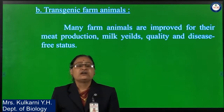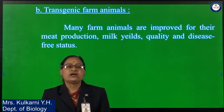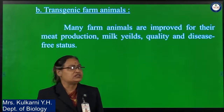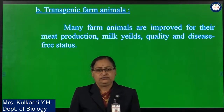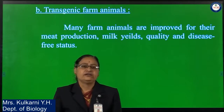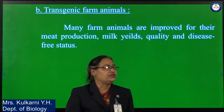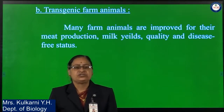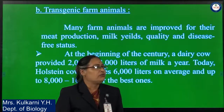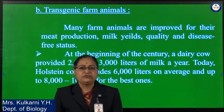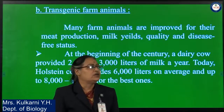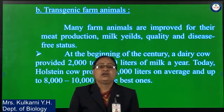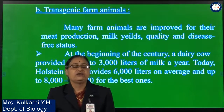Next, transgenic farm animals. Many transgenic farm animals are improved for meat production, milk yield, milk quality, and disease resistance. At the beginning, dairy cows provided 2,000 to 3,000 litres of milk per year.